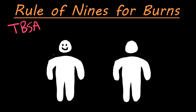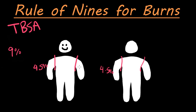If we imagine here, this is our anterior side and our posterior side. If their entire anterior right arm is burned, that would be 4.5%, plus the posterior would be another 4.5%, so their entire right arm is going to be 9%. So if their entire right arm is burned, we estimate that as a 9% burn of the total body surface area. It's going to be the same thing for the left arm — 4.5% on each side, totaling up to 9%.